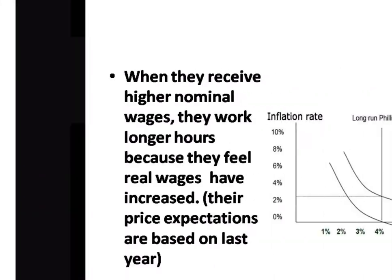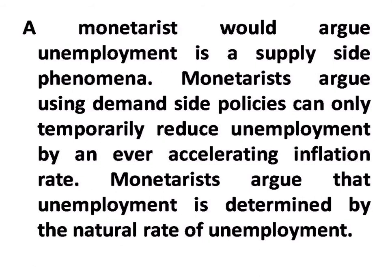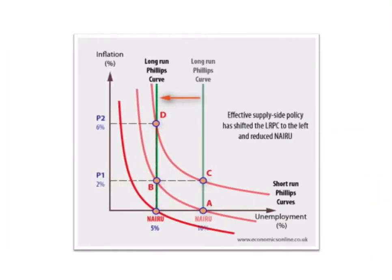Monetarists have argued that unemployment is a supply-side phenomenon. If demand-side policies are used, unemployment will only be temporarily reduced, and that will result in an accelerating inflation rate. Unemployment is determined by the natural rate of unemployment. Any lasting change is only possible through effective supply-side policy; demand-side policy produces only a temporary change in the long run.